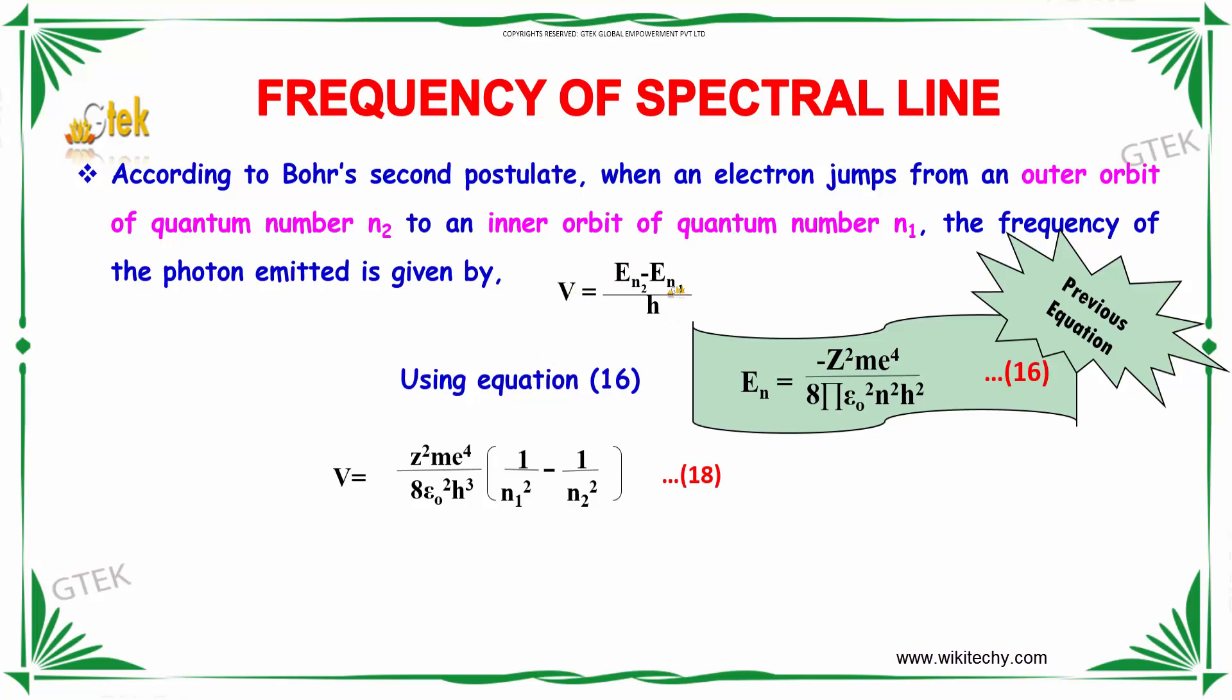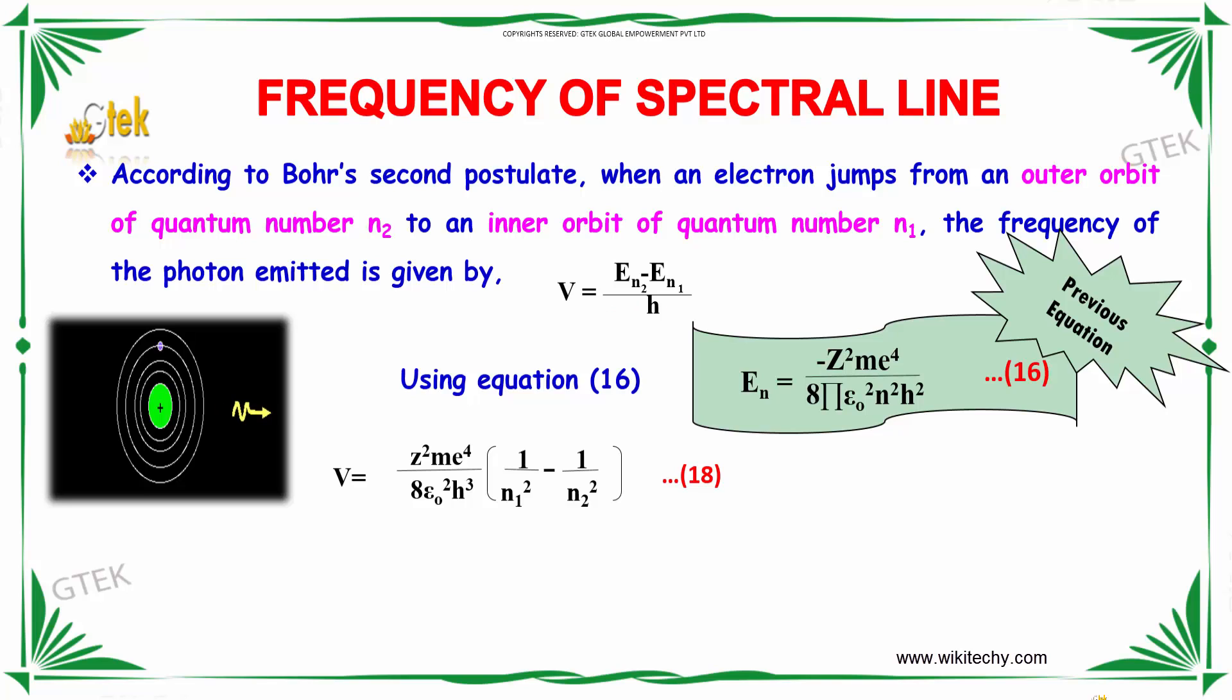the frequency of the photon emitted is given by ν = (En₂ - En₁)/h. Using equation 16, the total energy is -Z²me⁴/(8πε₀²n²h²).